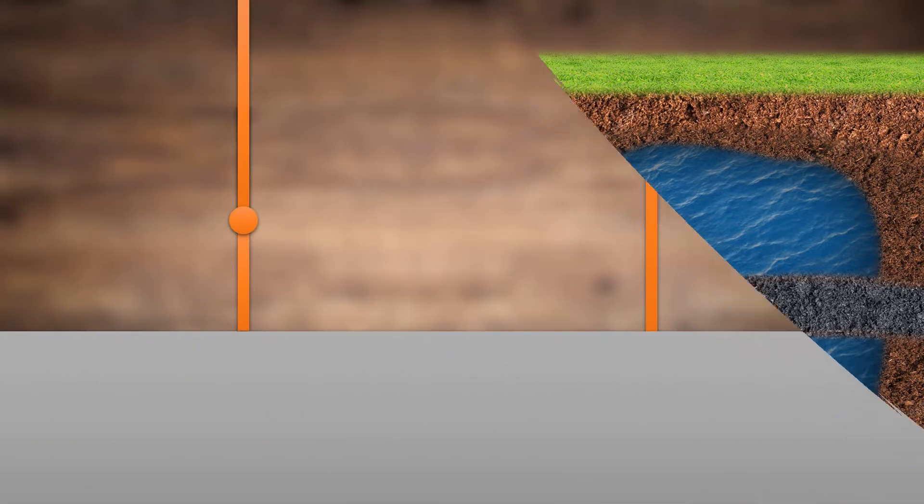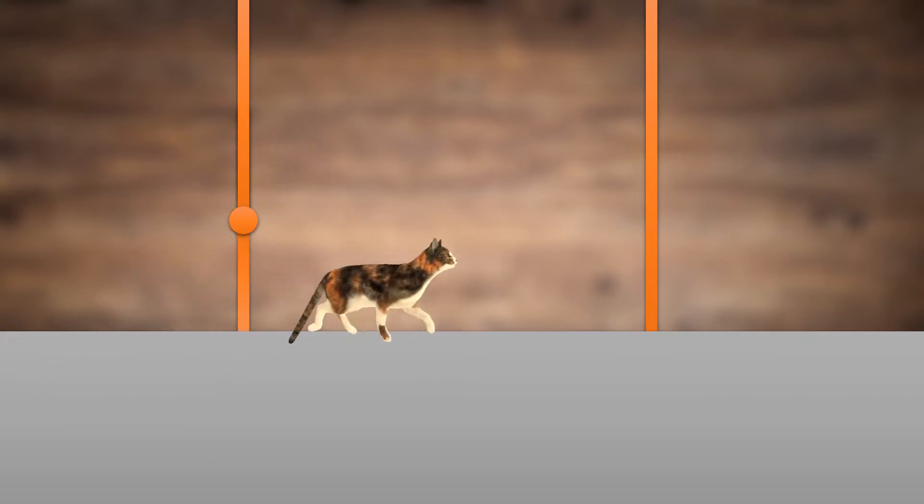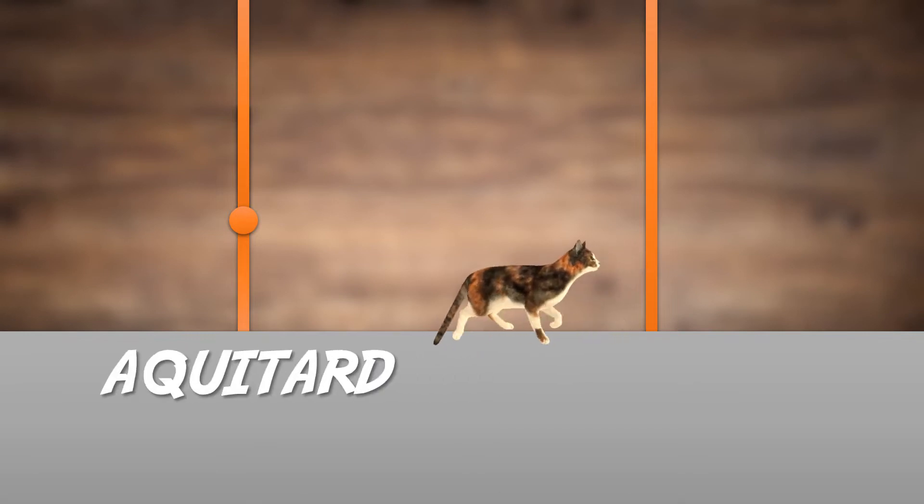So in essence, if brought to the surface, whenever you've got a barrier that allows free movement and a barrier which prevents free movement, this would be the aquitard, and this would be the aquacludes.